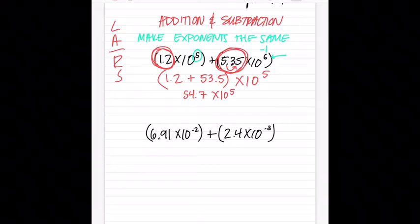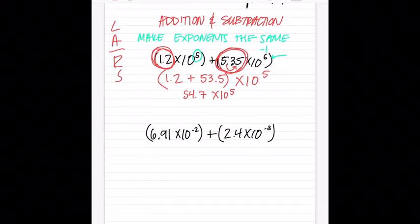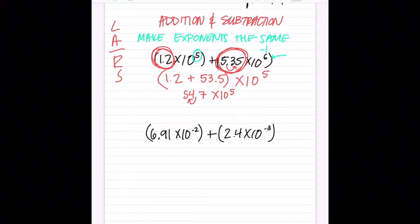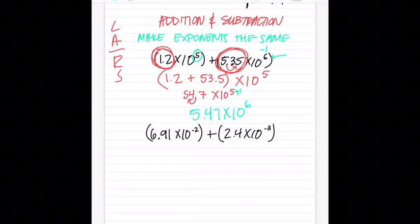Here's the problem with that answer: the decimal has two numbers to the left of it, which is not correct scientific notation. I need to move the decimal one place to the left — and using LARS, left means add, so I add one to my exponent. The final answer is 5.47 times 10 to the sixth.